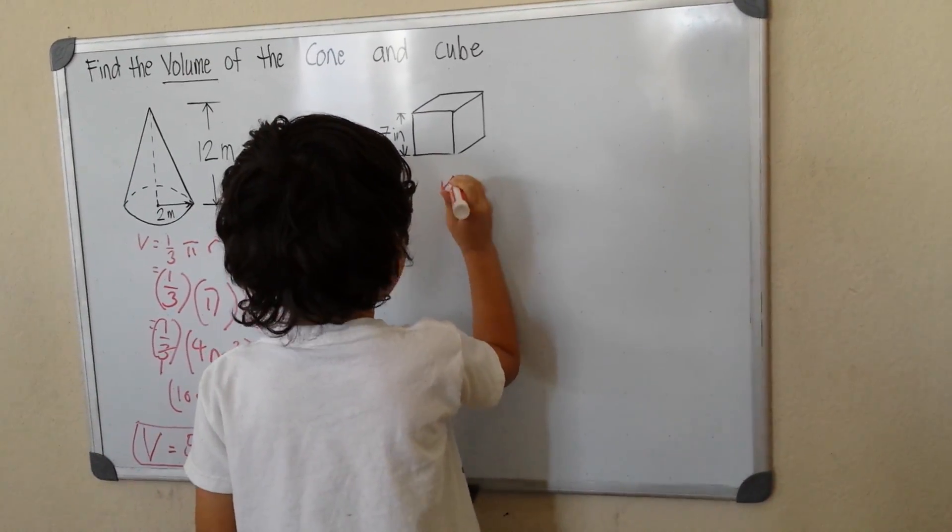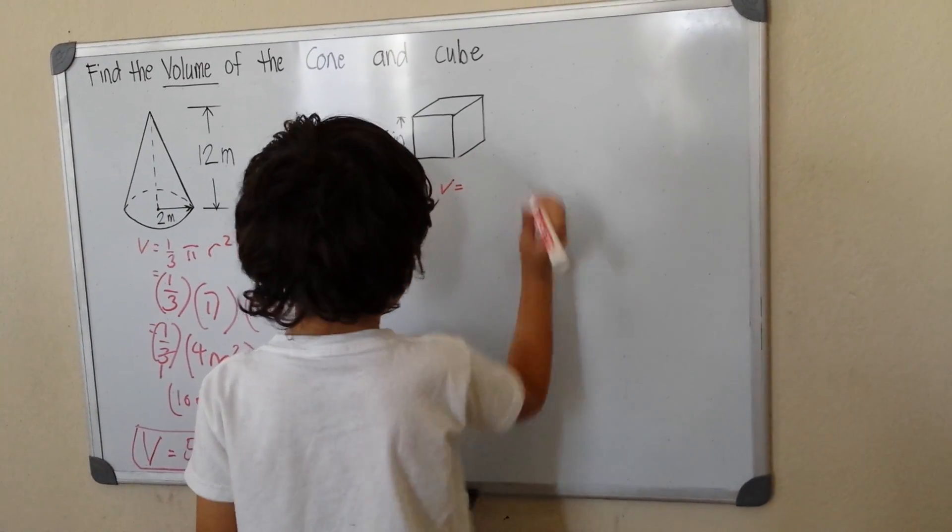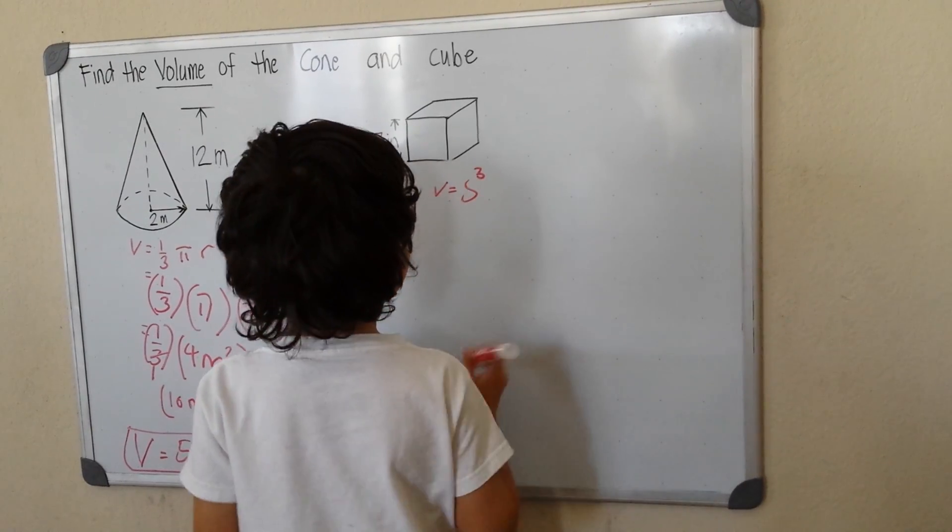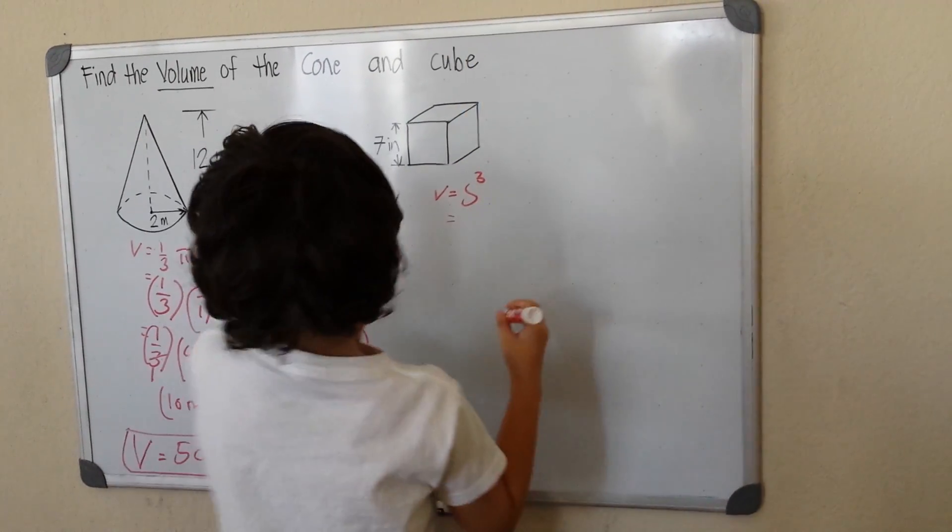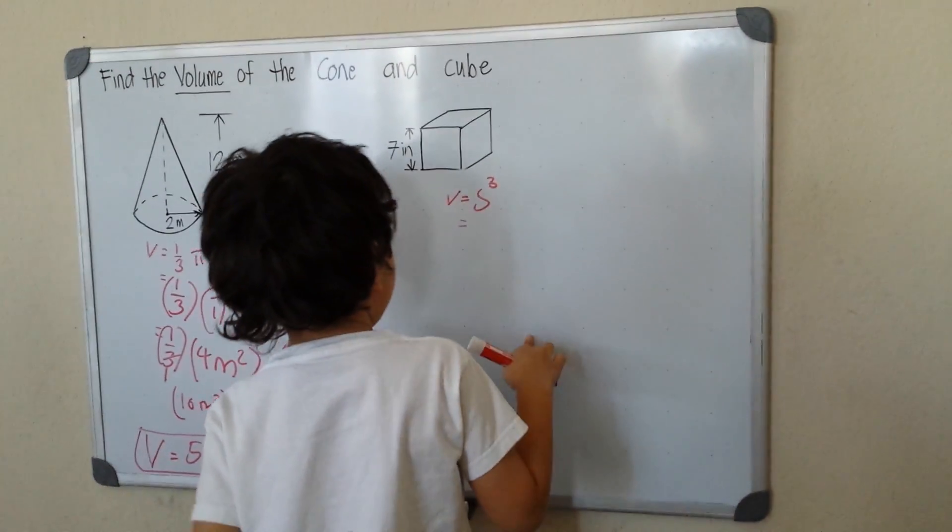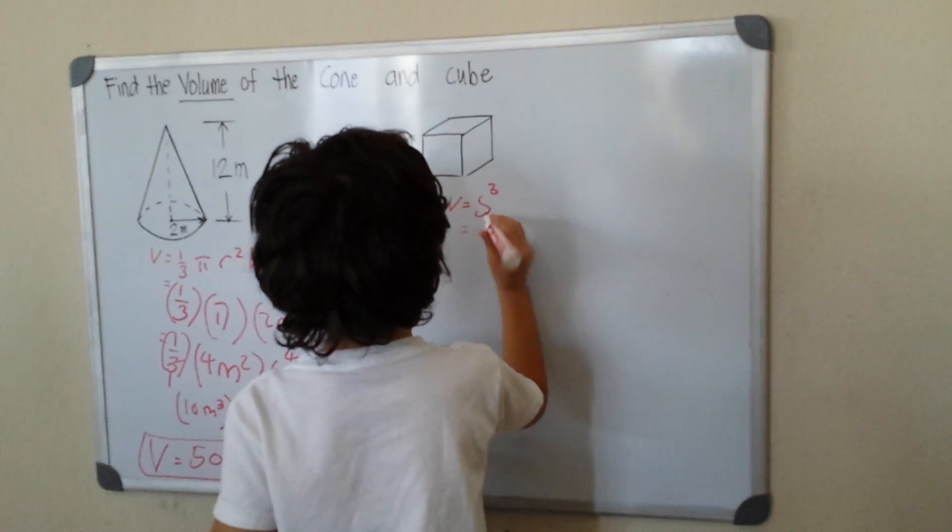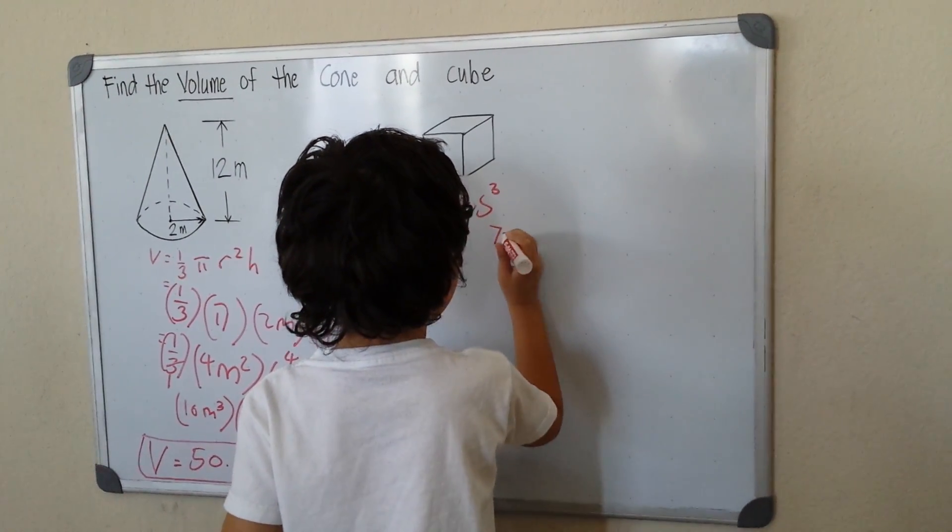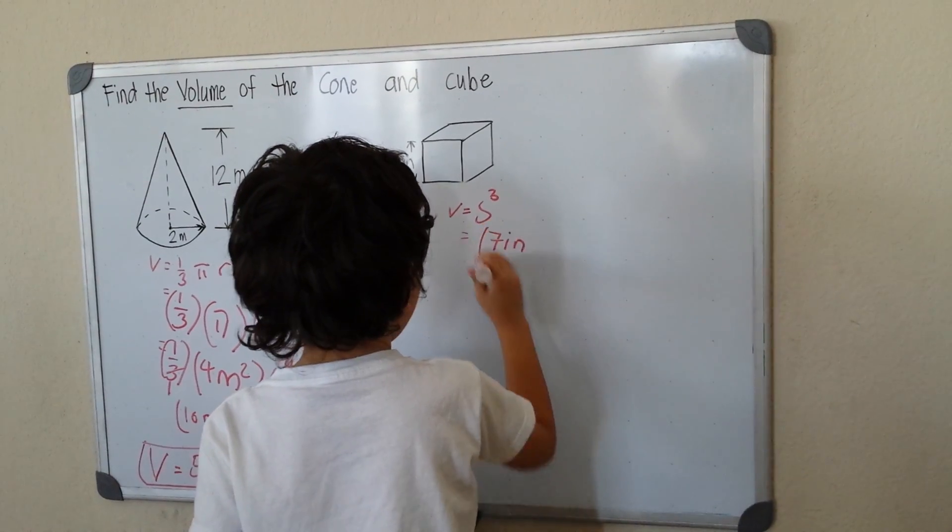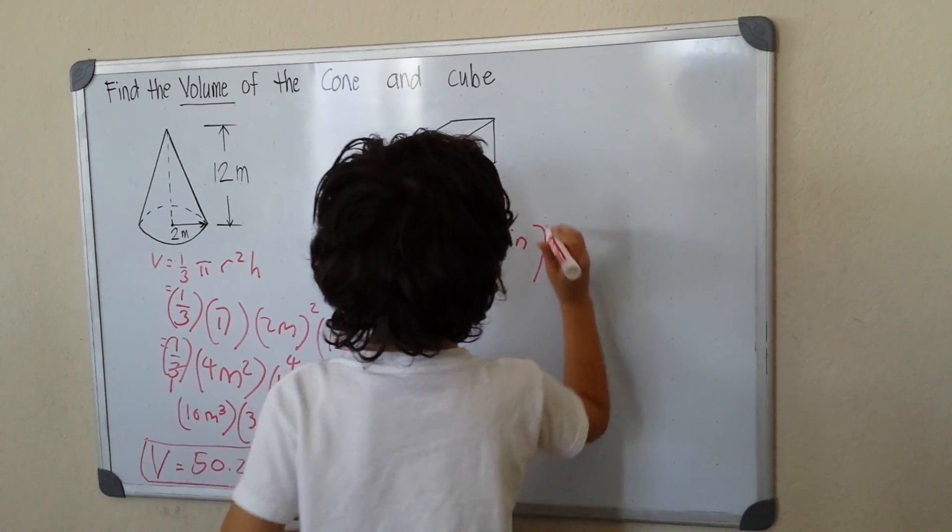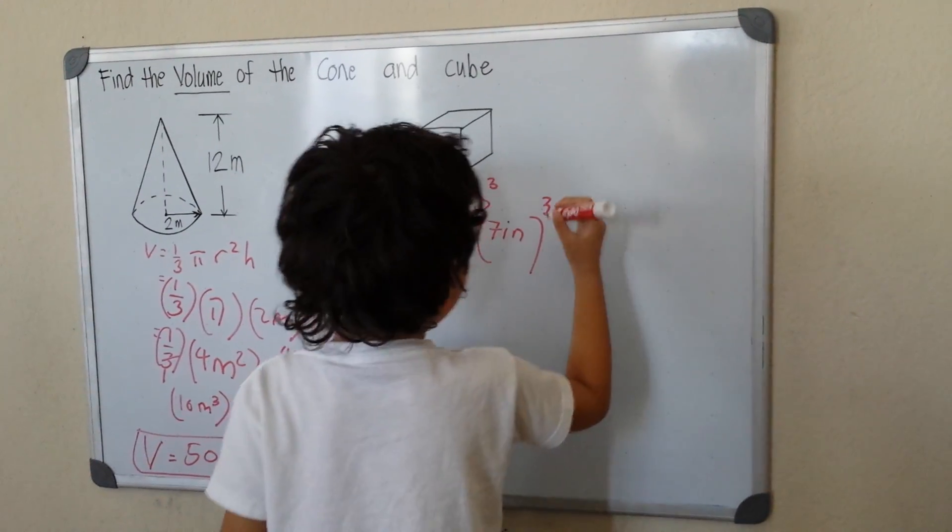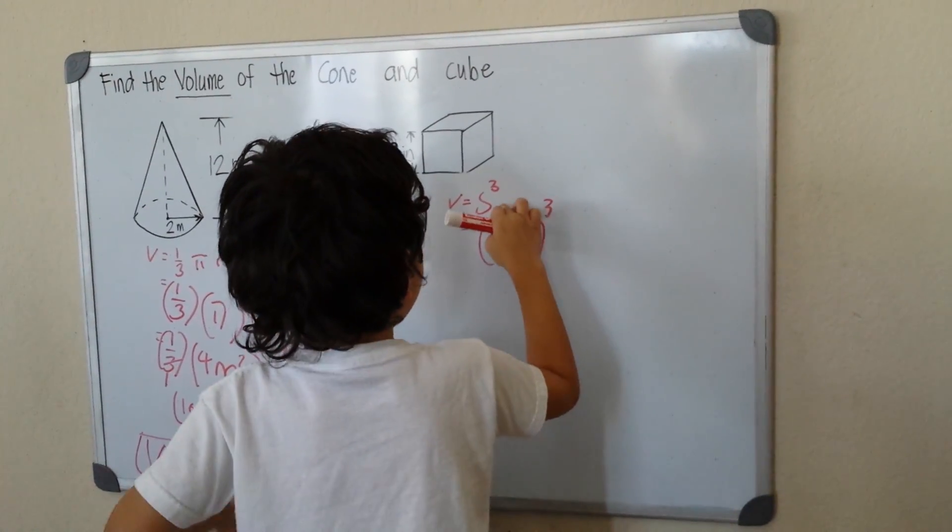So my volume for that is equal to side cubed. What is my side? My side is 7 inches. That's side cubed, because it's side times side times side.